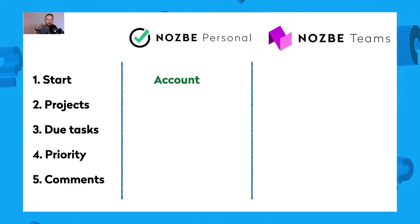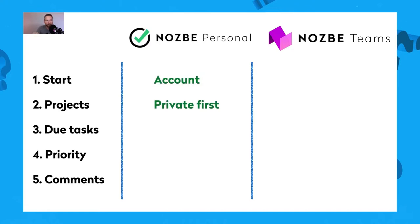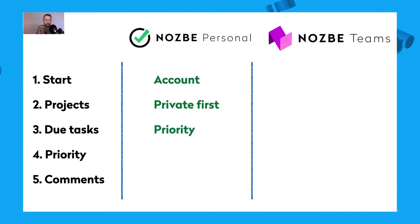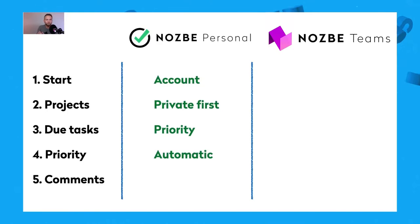In Nozbe Personal, you start with an account — it's just for you. Every project is by default private. So when you create a project in Nozbe Personal, it's your project unless you choose to share it. When you share it with somebody else, they'll be able to access this project, but until you do, it's yours and for your eyes only. Due tasks and reminders all go directly to your priority list, because it's just for you — it's your personal task manager. The priority is automatic. Sometimes tasks appear in your priority list because they need your attention. This is the most straightforward design, and it's been working for more than half a million users from all over the world.